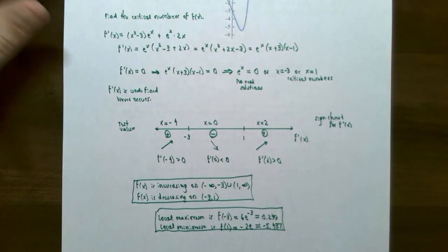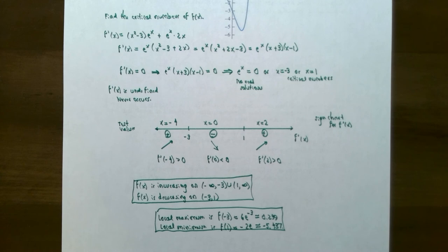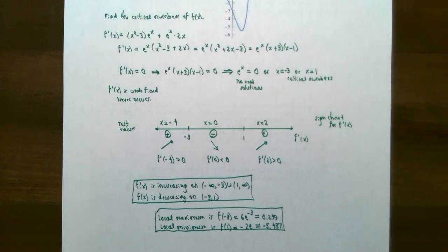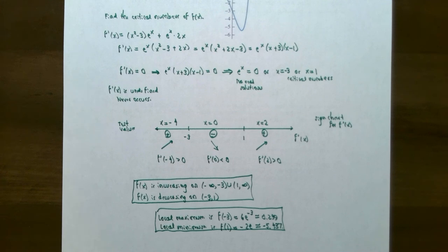I hope this video has helped you identify where the function is increasing and decreasing using its derivative and a sign chart, and also to use the first derivative test to identify where there's a local maximum and local minimum value for a function using a sign chart. If you have any questions about any of the examples we worked, please let me know, and as you work through the homework as well. We will finish up this section on determining the shape of a curve using its derivative with the final video using concavity and the second derivative.